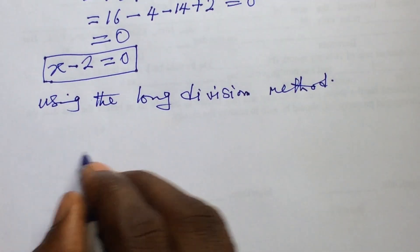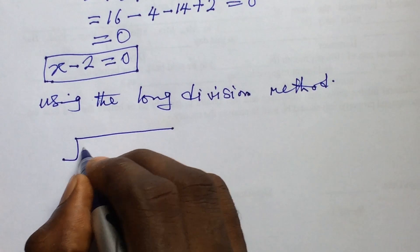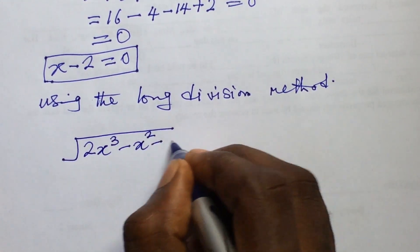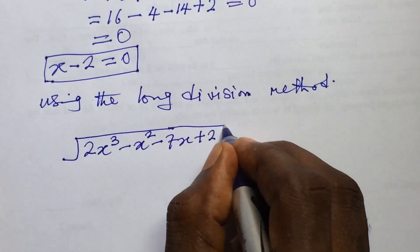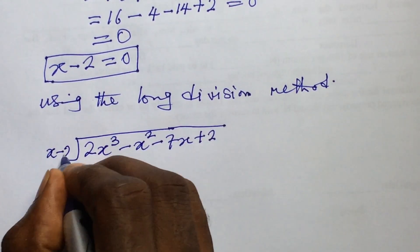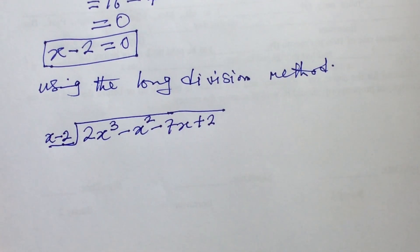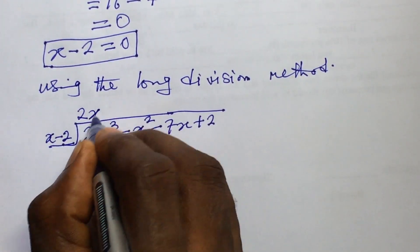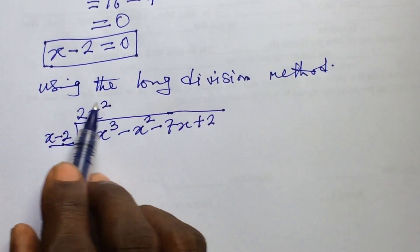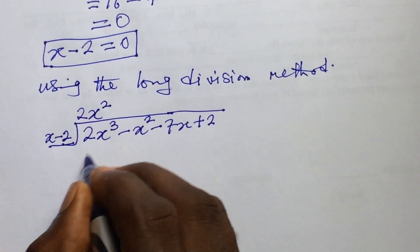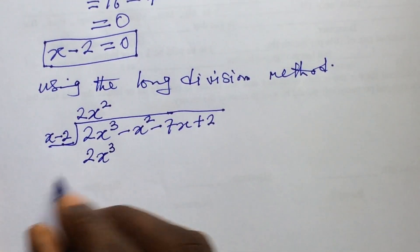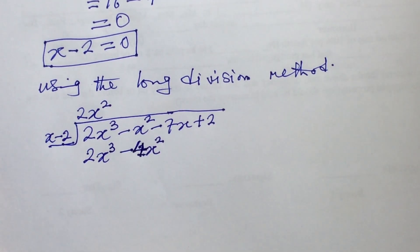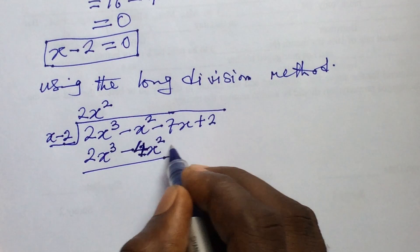Let's draw up our long division. We divide the polynomial 2x³ - x² - 7x + 2 by (x - 2). We use x to divide 2x³, which gives us 2x². Then we multiply 2x² by (x - 2) to get 2x³ - 4x². We subtract, leaving us with 3x².